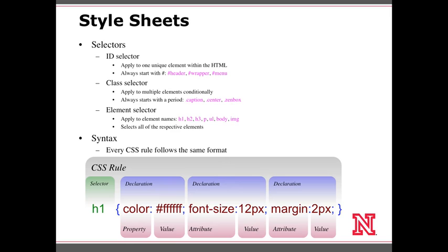The final selector is an element selector, which applies to specific HTML element names such as h1, h2, h3, paragraphs, ULs, body, image, and anchor. It selects all of those elements existing in the HTML document. So if I select a paragraph in my CSS, whatever I tell that paragraph to do is going to apply to all paragraphs in the HTML document.